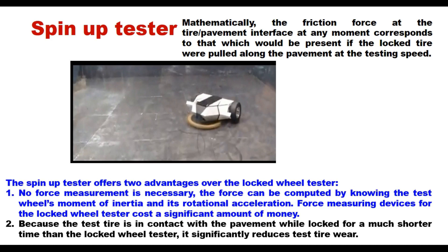The spin-up tester offers two distinct advantages over the locked wheel tester. First, no force measurement device is necessary — the force can be computed by knowing the test wheel's moment of inertia and its rotational acceleration, whereas force-measuring devices for the locked wheel tester cost a significant amount of money. Second, because the test tire is in contact with the pavement while locked for a much shorter time, it significantly reduces test tire wear.